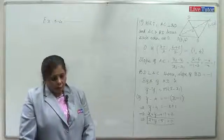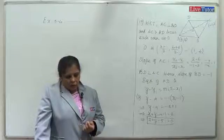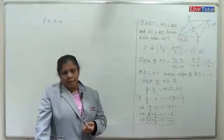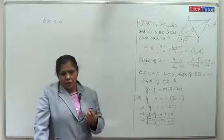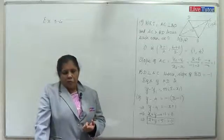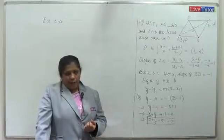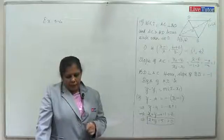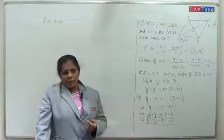The last question in the exercise: find the equation of the line whose gradient is 3/2 — that is, slope m equals 3/2 — and which passes through point P.